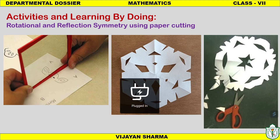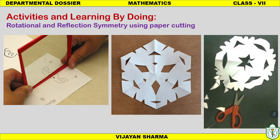The second activity involves rotational and reflection symmetry using paper cutting. As shown in the figure, a mirror is placed next to an object depicting reflection symmetry. In another figure, a hexagonal structure demonstrates rotational symmetry — rotating it 60 degrees leaves the pattern unchanged. This kind of activity teaches students the difference between rotational and reflection symmetry.